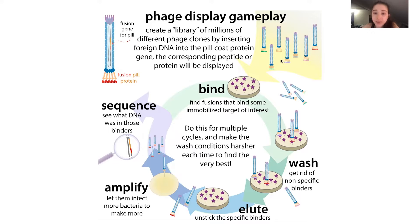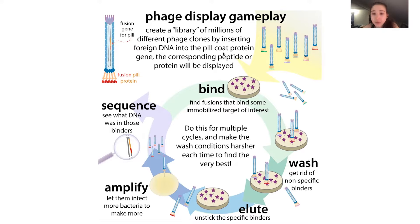You can mix them, get them to infect bacteria, and make a lot of them. Now you want to find the ones that are going to bind to something of interest. This is sometimes called biopanning. You need to immobilize the target of interest — sometimes on a plate, sometimes on beads. You mix your phage library displaying all these different protein bits with the immobilized target. The ones that bind are going to stick; the ones that don't bind aren't going to stick.